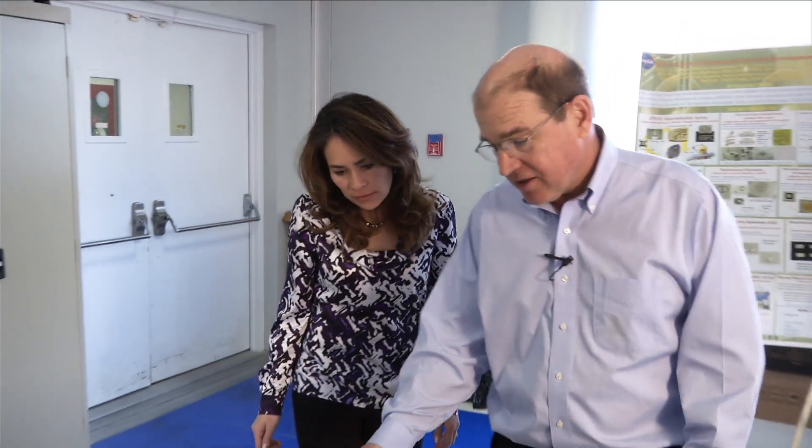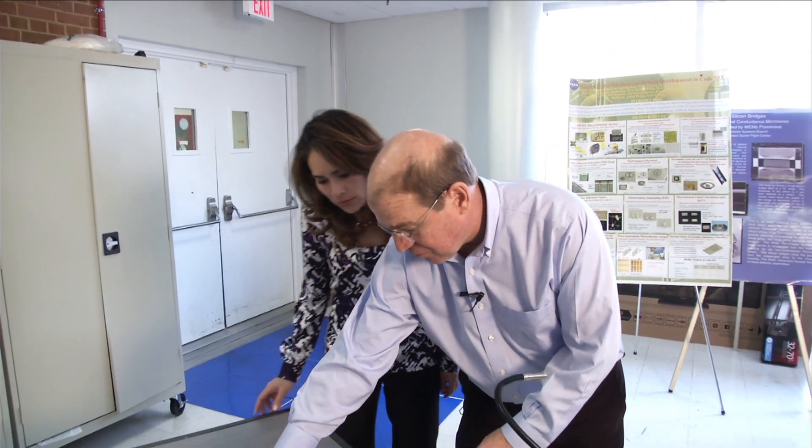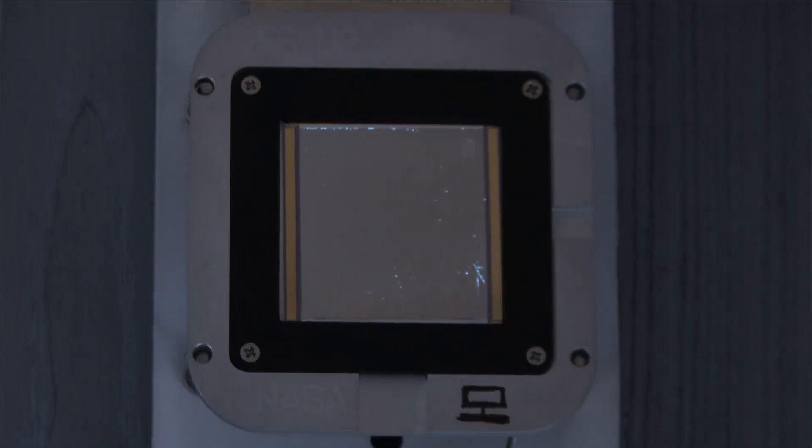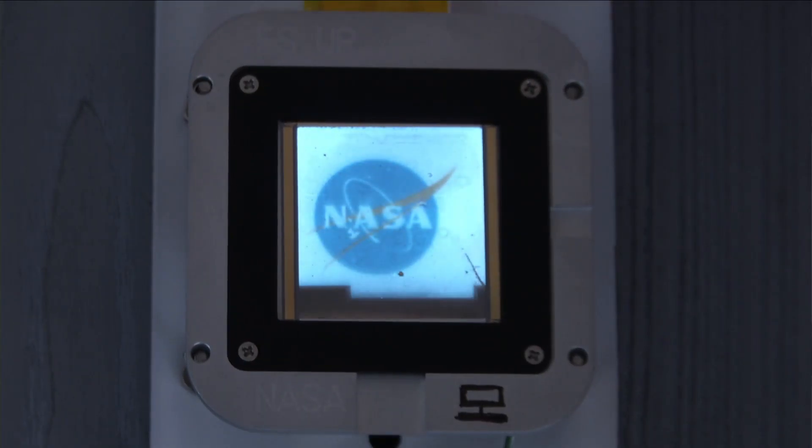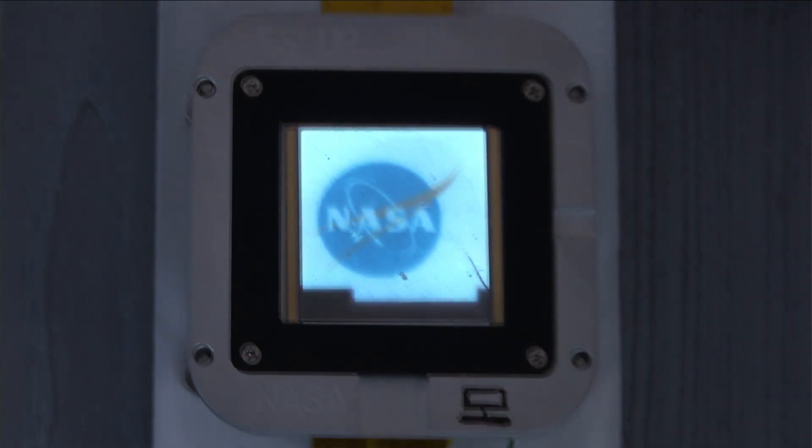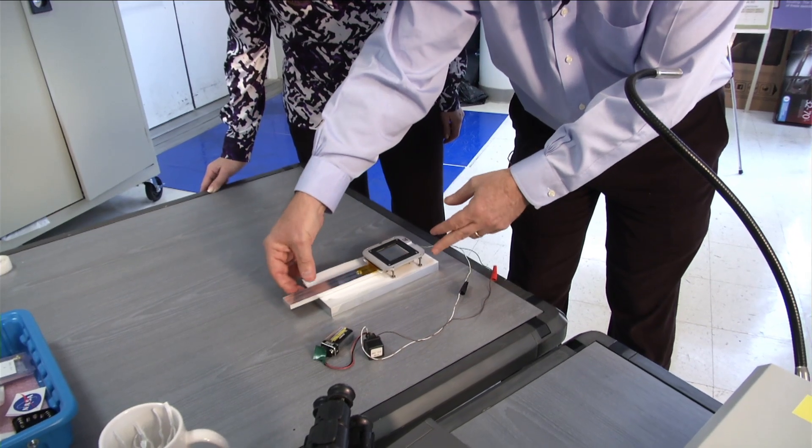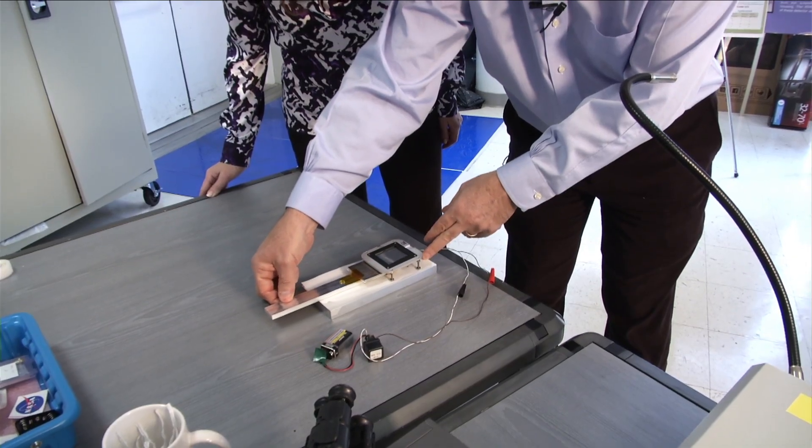Come on in, Mary. In here we have a micro-shutter array set up where we can open it with a magnet so you can see how the little shutters work. As we slide the magnet across here, it's open and you can see the NASA logo behind it. We pull it back and it's closed. When we combine that with our electronics, we can actually open any single shutter in the entire array.